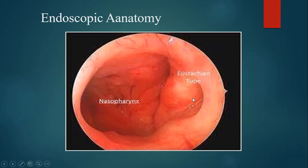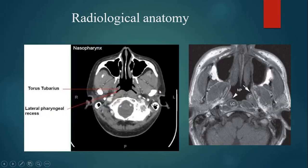This is the endoscopic view of the nasopharynx. You can see the opening of the Eustachian tube and the area of the fossa of Rosenmuller. In the CT scan picture, this is an axial section of the nose, paranasal sinuses, and nasopharynx. Here you can see the torus tubarius, the swelling formed by the cartilaginous part of the Eustachian tube near its opening, and behind it is the fossa of Rosenmuller or lateral pharyngeal recess.